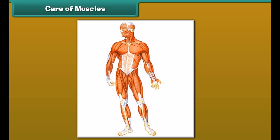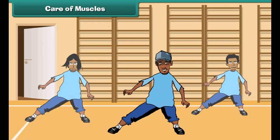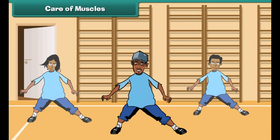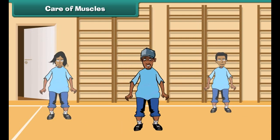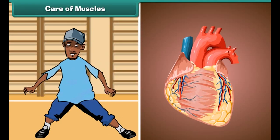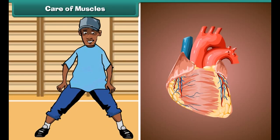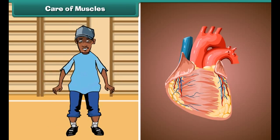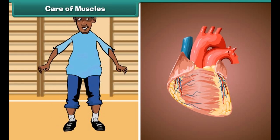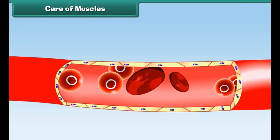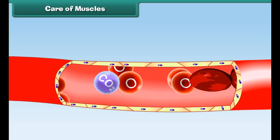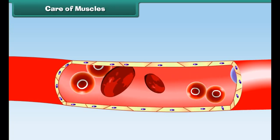The functions of the stomach, intestines, and heart go on in a fixed manner. The functioning of these organs is not dependent on our wishes. Such muscles are called involuntary muscles, and their movements are called involuntary movements.